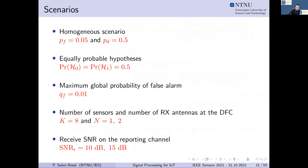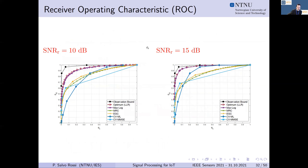For examples, we consider a homogeneous scenario with equally probable hypotheses and a constraint on maximum global probability of false alarm, with different combinations of numbers of sensors, receive antennas, and receive SNR on reporting channels. Performance is shown in terms of receiver operating characteristics for 10 dB and 50 dB cases. We can see that max-log is basically very close to the optimum rule, while other rules may be more appealing depending on whether we are at low or high false alarm probability.